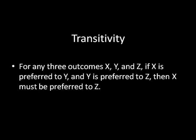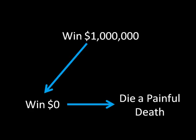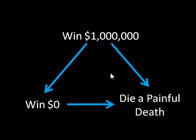Let's look at what this means graphically. Here we have the same three outcomes from our video on completeness: winning a million dollars, winning zero dollars, and dying a painful death. This is currently an incomplete preference relation because we don't know what's going on between winning a million dollars and dying a painful death. But let's assume that this individual is rational — they have a complete and transitive preference relation and just haven't filled this in yet. If they prefer winning a million dollars to winning zero dollars and prefer winning zero dollars to dying a painful death, then it's only logical that this person must also prefer winning a million dollars to dying a painful death.